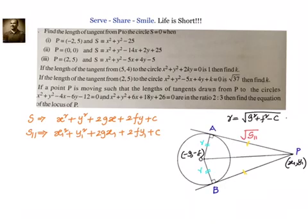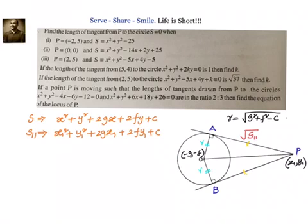Hello friends, welcome back. In this session, let us try to understand the concept of how to find out the length of tangent drawn from an external point to a circle. Also, we will try to solve some problems related to the same. So first, let us understand how to find out the length of the tangent drawn from an external point, let us say P, to the circle S equal to 0.